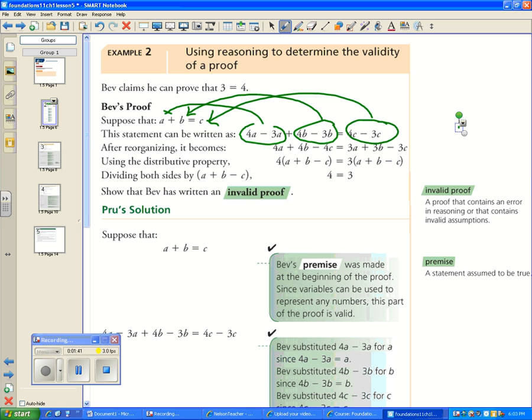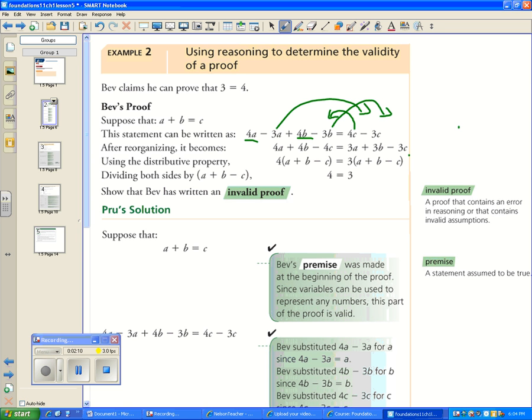And then when he wrote this out, he said, well, this can be regrouped. He brought all the 4s over to one side: we have 4a plus 4b minus 4c is equal to 3a plus 3b minus 3c. He did some factoring and using the distributive property, he factored out a 4: 4 times (a plus b minus c) equals 3 times (a plus b minus c). He divided both sides by (a plus b minus c) and he got 4 equals 3.